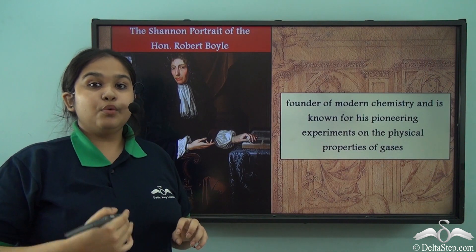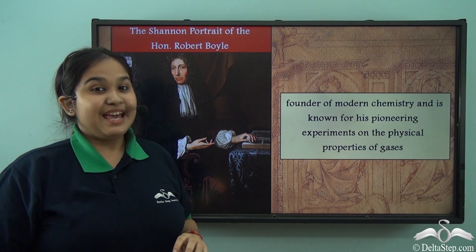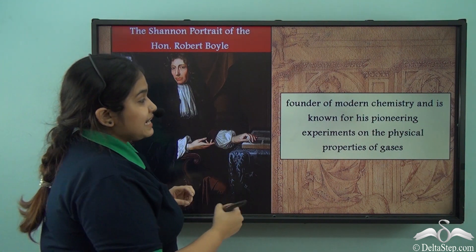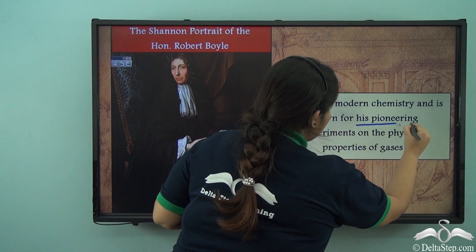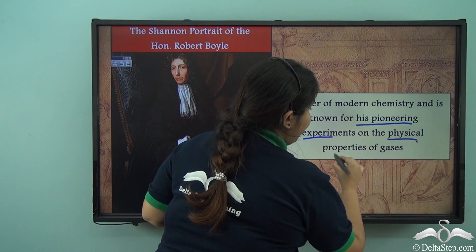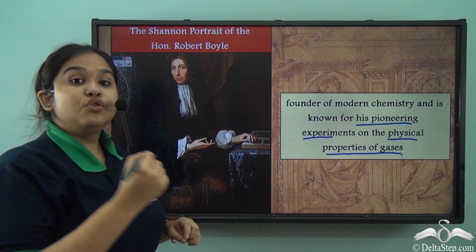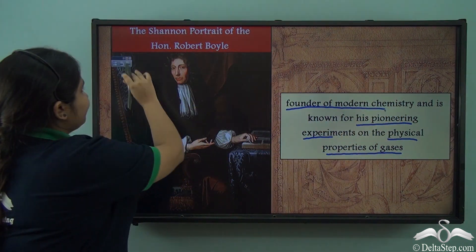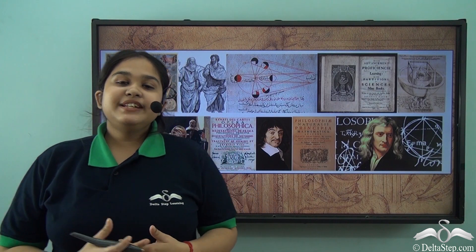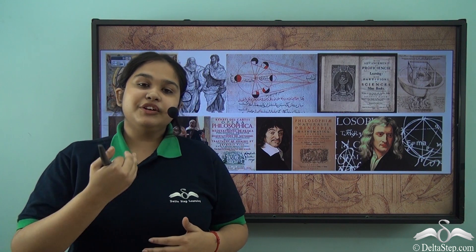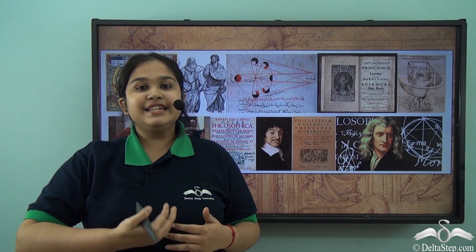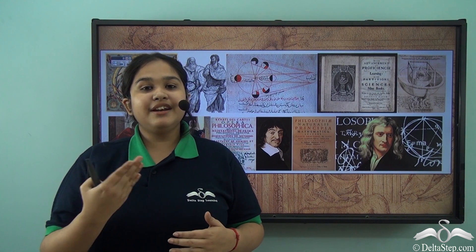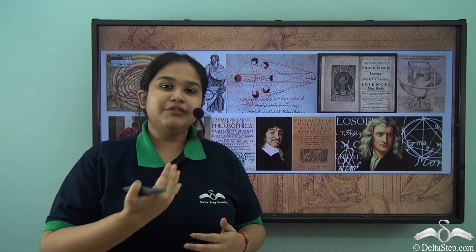In the field of Chemistry, Robert Boyle is known for his pioneering experiments on the physical properties of gases, and he is known as the founder of modern chemistry. Thus, scientific reason and logic created these path-breaking discoveries in the Renaissance period that ultimately had an effect on the modern world that we live in.